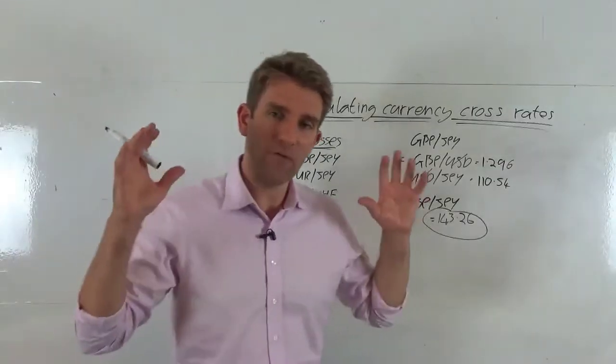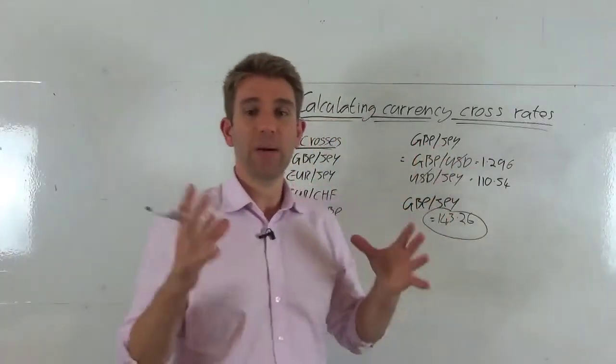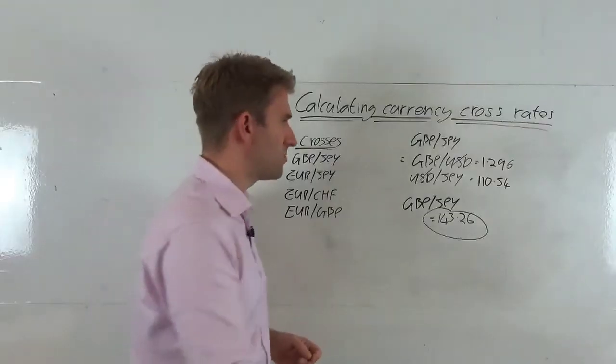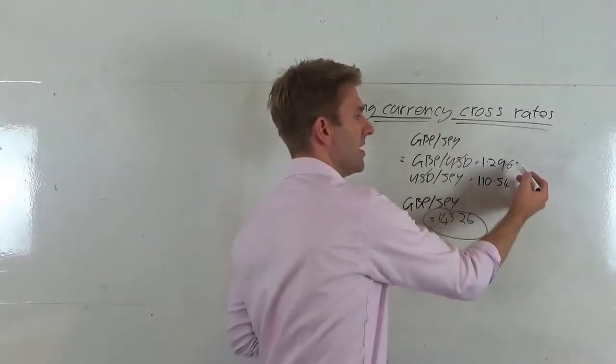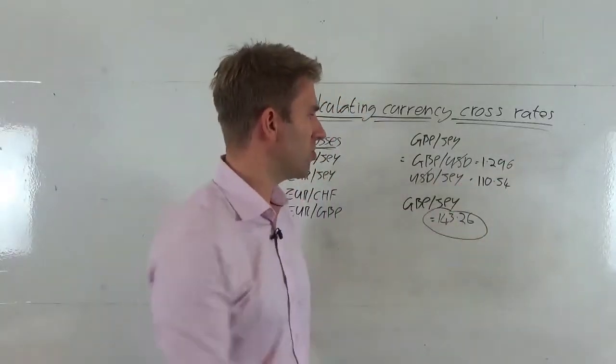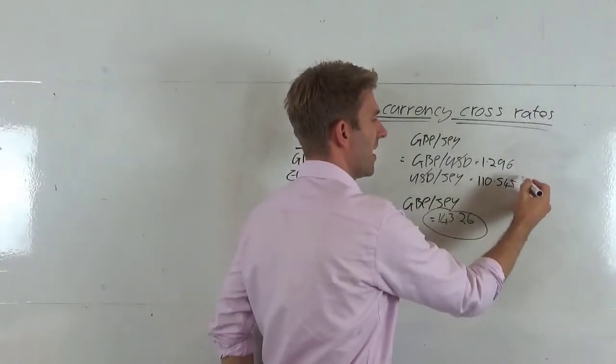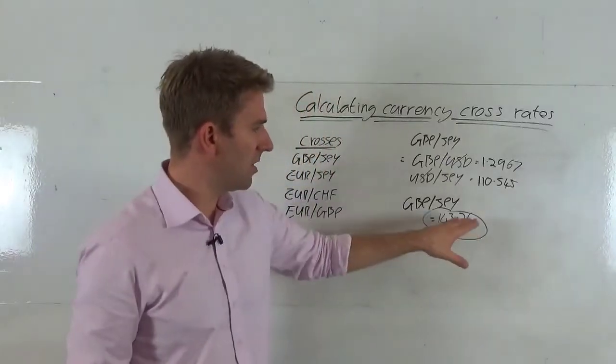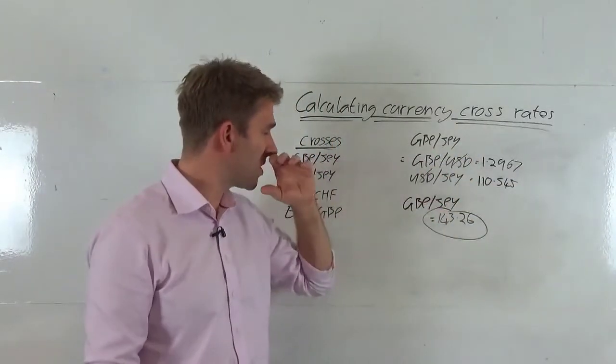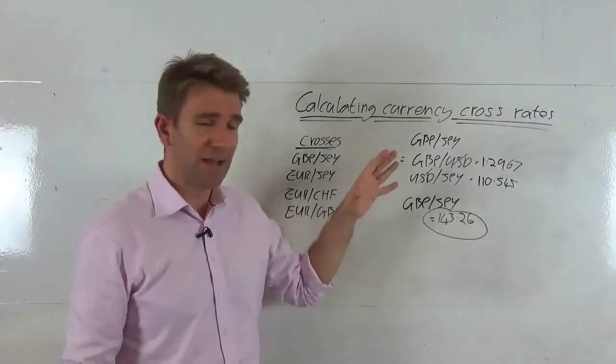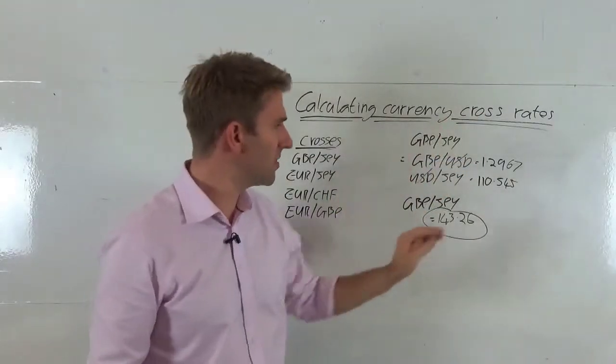So if you don't believe me, go and check it out. Have a look on Trading View, have a look on any of your trading platforms. Now make sure you use all the decimal places here. I've kind of taken a bit of a shortcut just for maths purposes and knocked off the end one, but make sure you've got as many as it quotes you because that's going to give you an accurate price. And interestingly, play around with the calculator.